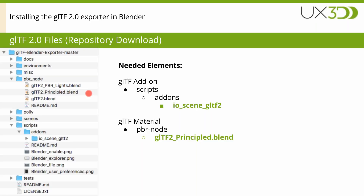The newer PBR node using the principal shader is the latest official one — important for simulating materials. There's also an experimental node for dynamic lights, which is still being discussed. Then there's the io_scene_gltf add-on, which you need to link to your Blender installation — that's what gives you the menu entries and tools to export files.